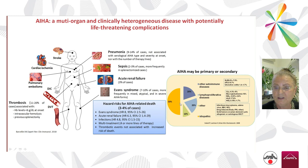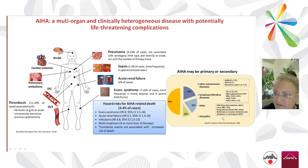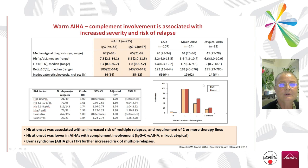It is also important to note that the disease may be primary or secondary — in 50% of cases there is no underlying disease. In other cases, there may be other autoimmune diseases, lymphoproliferative disorders, infections, drugs, solid tumors, or allogeneic or autologous stem cell transplant.